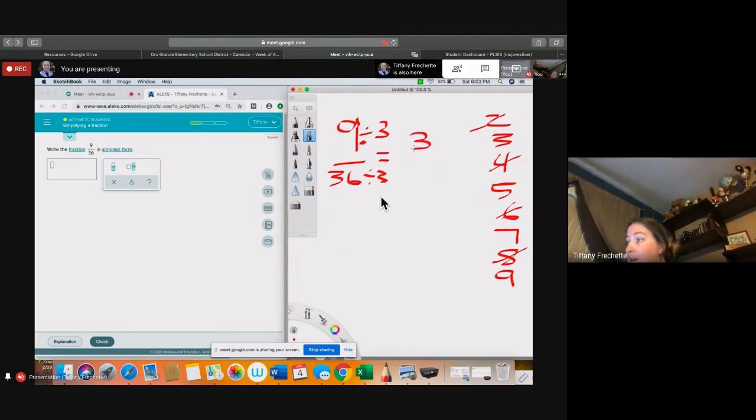So you go, I know 9 divided by 3 is 3. 36 divided by 3. So I can kind of do this mental math. I know 3 divided by 3 is 1. There's nothing left over. 6 divided by 3 is 2. All right, so I'm going to bring it down here. 3 and 12. So we need to make sure that this is, in fact, done.